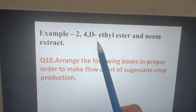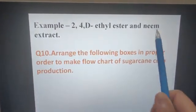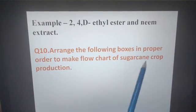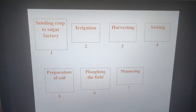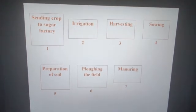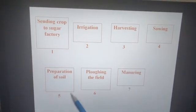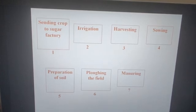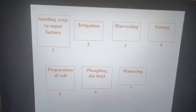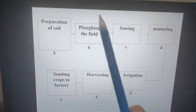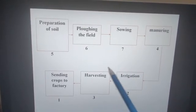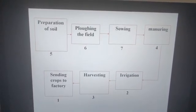For example, 2,4-D ethyl ester and neem extract — neem extract is an organic weedicide. Next, arrange the following boxes in proper order to make a flowchart of sugarcane production. The correct order is: preparation of soil and plowing the field, sowing, manuring, irrigation, harvesting, then sending the crop to the sugar factory.